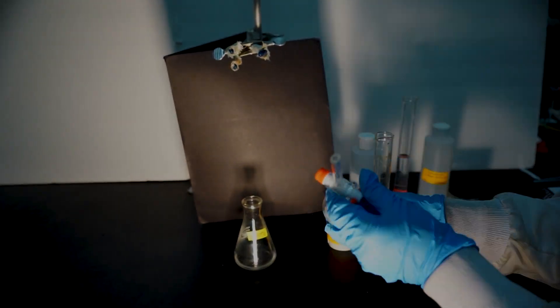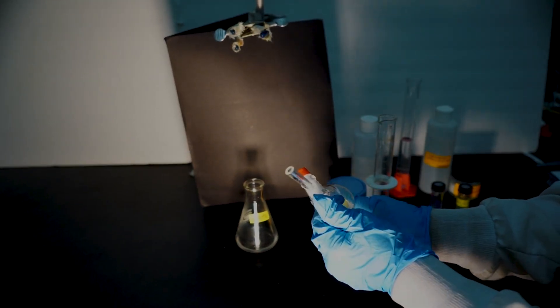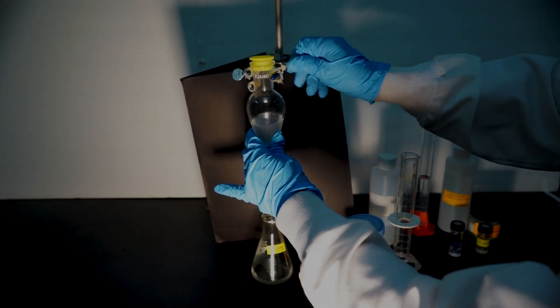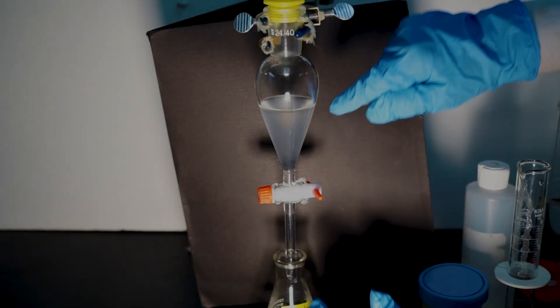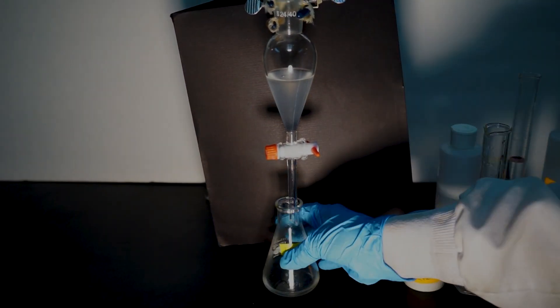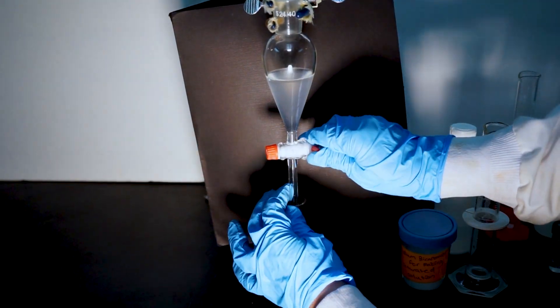Gently shake once again, and remember to release the pressure every so often. Return the flask to the ring stand, and let two layers form.